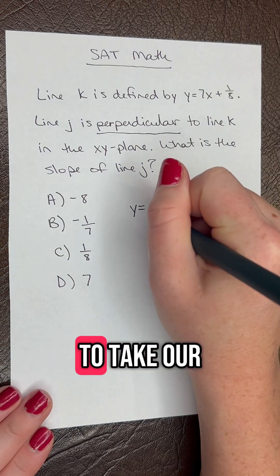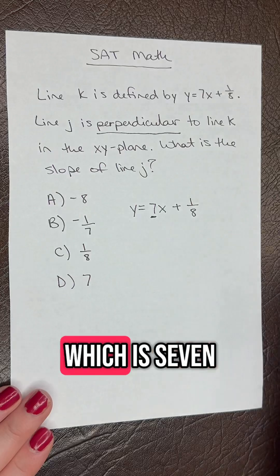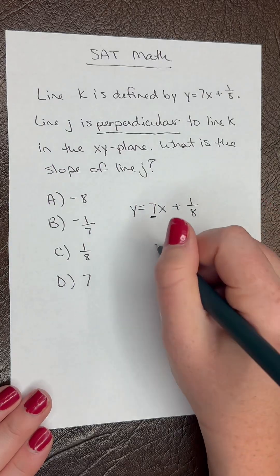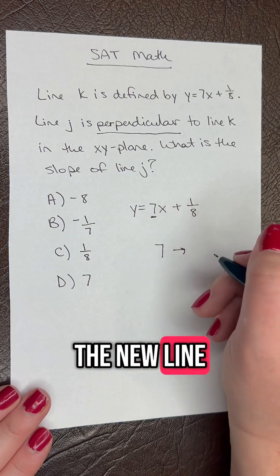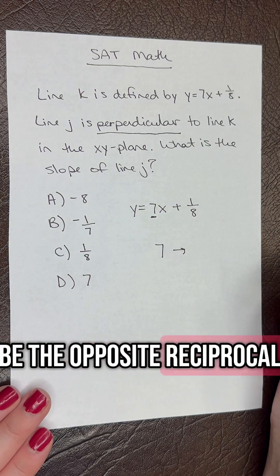So we need to take our slope here which is 7, and then we know that if a line is perpendicular, the slope of the new line is going to be the opposite reciprocal.